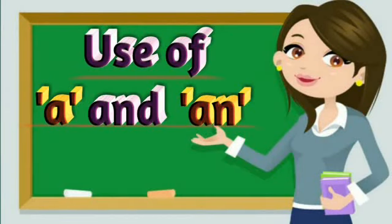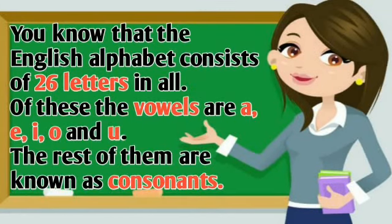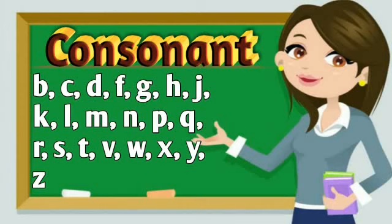Let's learn the use of A and AN. You know that the English alphabet consists of 26 letters in all. Of these, the vowels are A, E, I, O, and U. The rest of them are known as consonants.